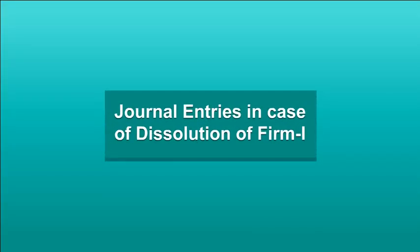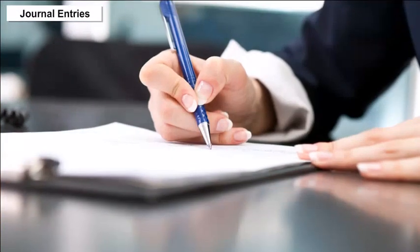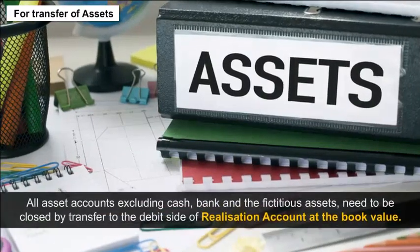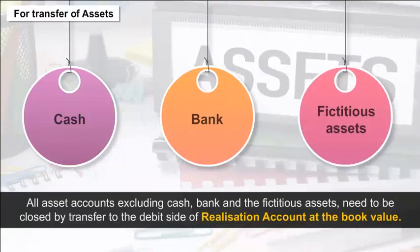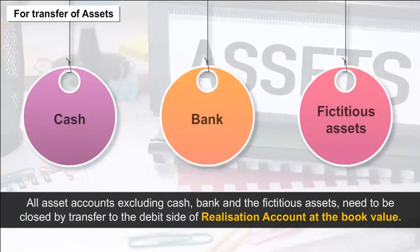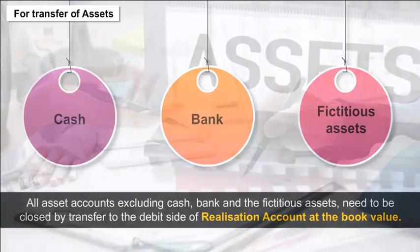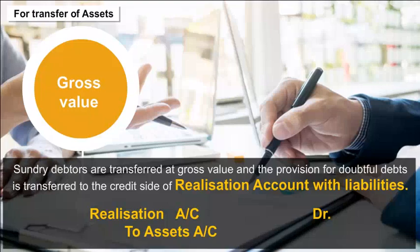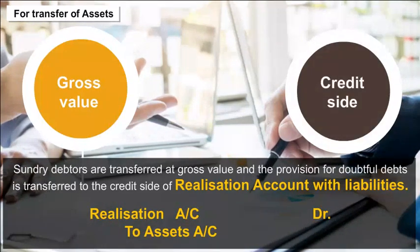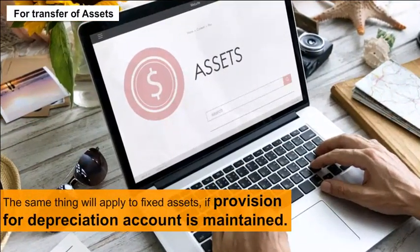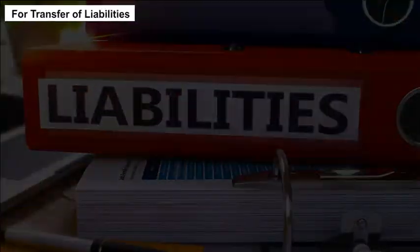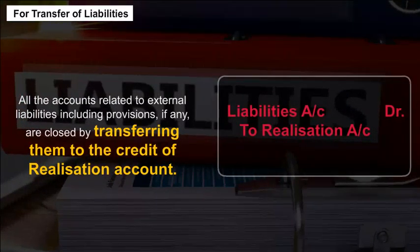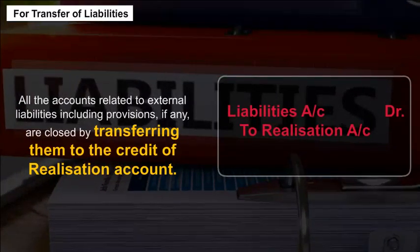Journal Entries in Case of Dissolution of Firm. For transfer of assets: all asset accounts excluding cash, bank, and fictitious assets need to be closed by transfer to the debit side of the realization account at book value. Sundry debtors are transferred at gross value and the provision for doubtful debts is transferred to the credit side of the realization account along with liabilities. The same applies to fixed assets if a provision for depreciation account is maintained. For transfer of liabilities: all accounts related to external liabilities, including provisions if any, are closed by transferring them to the credit of the realization account.